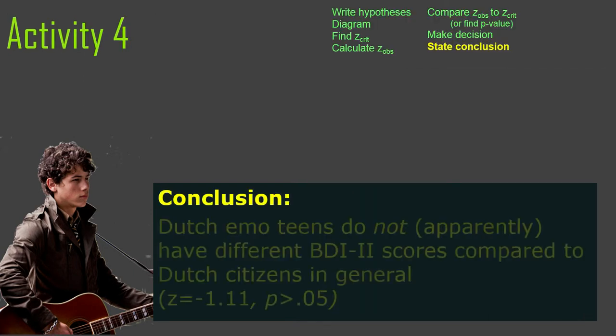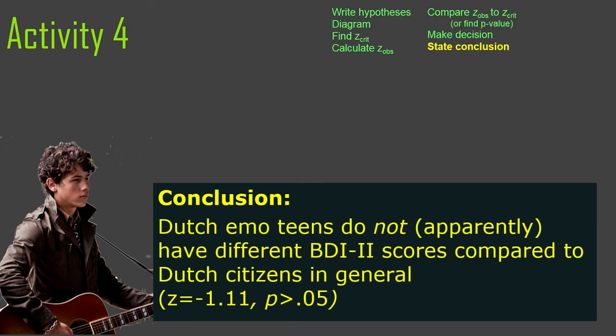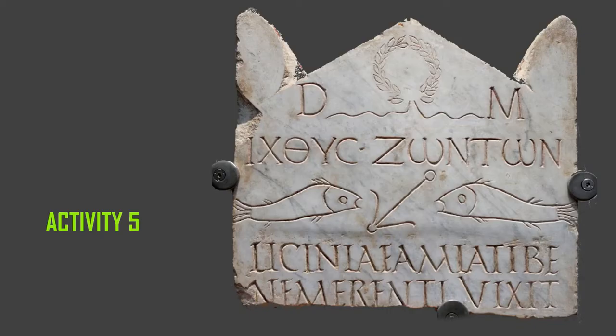Our conclusion: Dutch emo teens do not apparently have different BDI-2 scores compared to Dutch citizens in general. Z equals negative 1.11, p is greater than 0.05. It hurts to write p is greater than 0.05 after you've been doing this for a while, but that's the result.